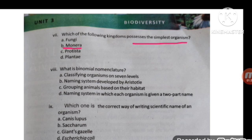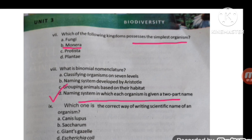The next MCQ is: what is binomial nomenclature? Binomial nomenclature is a naming system in which each organism is given a two-part name.